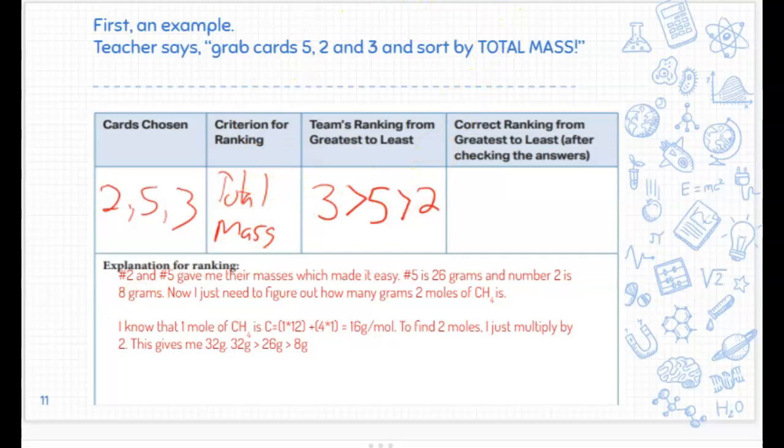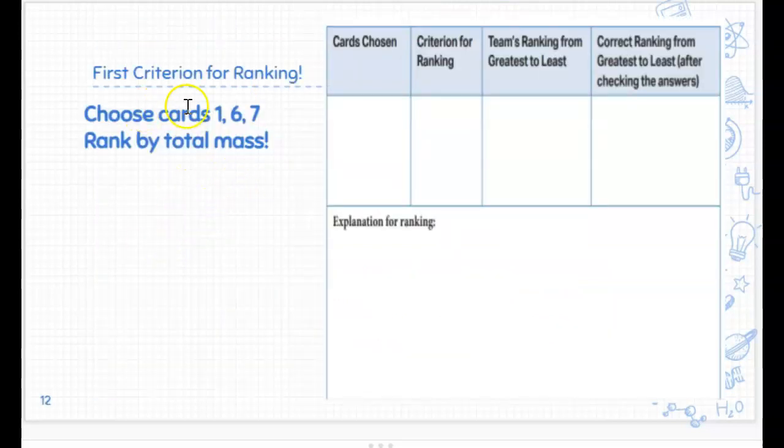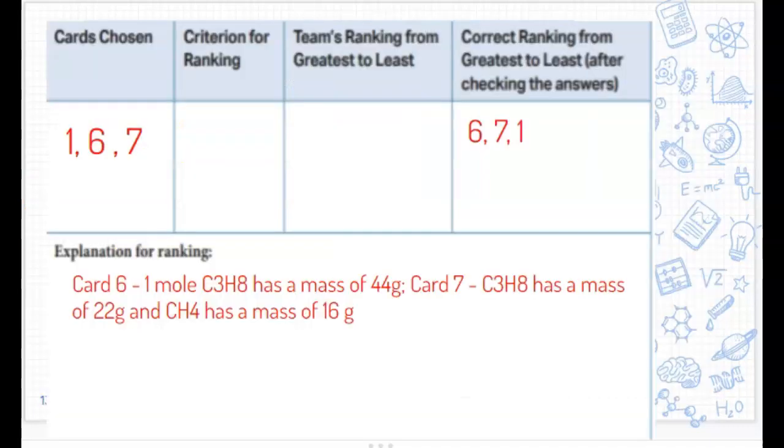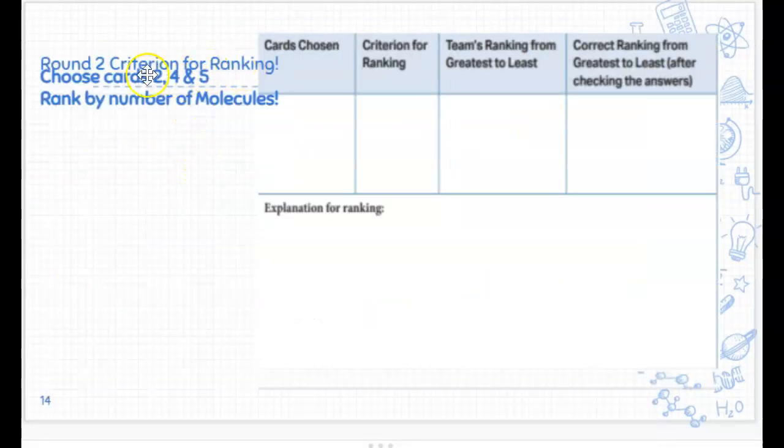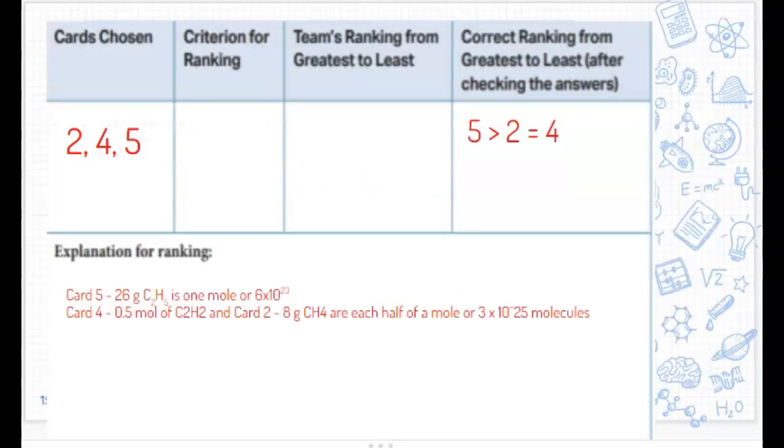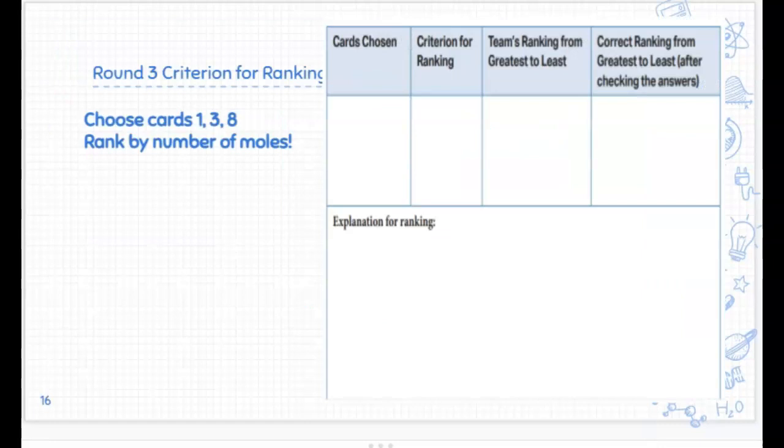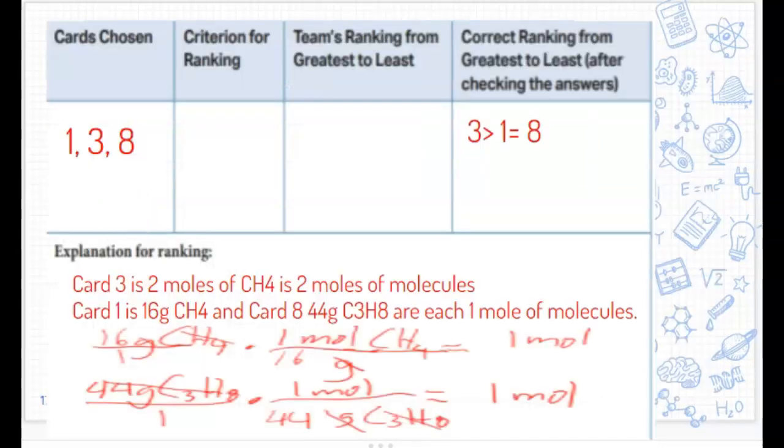This is just a criteria for success. And then you'll go through the various rounds. So you'll start with this. Choose 1, 6, and 7, rank by mass. There will be an answer key. You can go through them. Grab 2, 4, and 5, and rank by number of molecules. Answer key and rationale. Same thing, 1, 3, and 8, rank by moles.